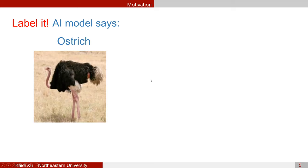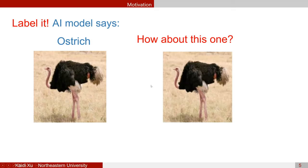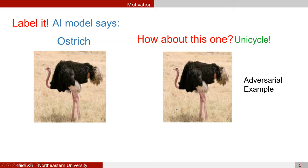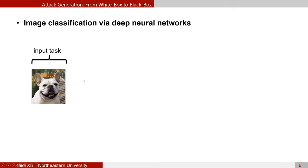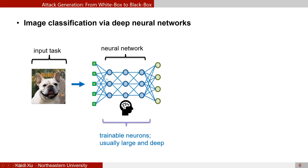Given a natural image, most people would label it as an ostrich. However, a well-trained AI model might label it as a unicycle. The differences between the two images cannot be noticed by human eyes — it may be only a few pixels changed, or the magnitude of the total perturbation is too small. We call such images adversarial examples.